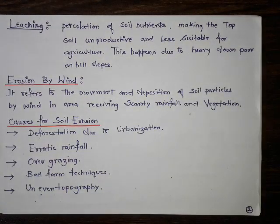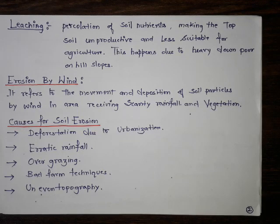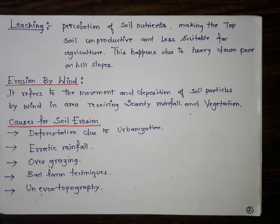Uneven topography in India, like mountain slopes that are very steep, means surface runoff can cause deep gullies, making the land not suitable for terrace farming. As far as the plains are concerned, drained by rivers like the Ganga, the Indo-Gangetic plain has become prone to sheet erosion, where every year the lands flood, making it unsuitable for agriculture, and many times standing crops are also affected.